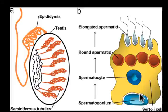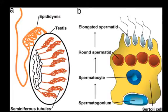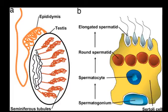As the spermatogonium is stimulated by hormones from the pituitary, it turns into a spermatocyte. That spermatocyte will undergo meiosis and develop into four round spermatids — immature, haploid sperm cells with half the number of chromosomes of body cells. Those spermatids will develop tails and become mature sperm, eventually released into the seminiferous tubules.